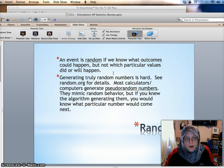An event is random if we know what outcomes could happen but not which particular values did or will happen. Generating really random numbers is hard. Random.org is one website where you can use truly random numbers. I showed a textbook in class that was a table full of random numbers. There's a random number table in the back of your textbook. Those numbers are generated by truly random processes such as radioactive decay times. Most calculators use pseudo-random numbers which means they mimic random behavior. But if you knew the algorithm generating them you would know what particular number would come next. But they're good enough for our purposes.